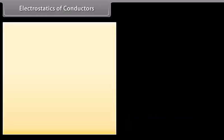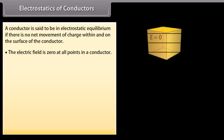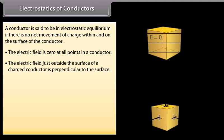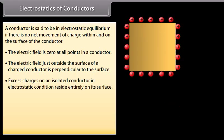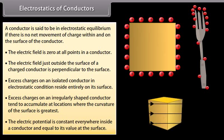Electrostatics of conductors. A conductor is in electrostatic equilibrium if there is no net movement of charge within or on its surface. The electric field is zero at all points inside a conductor. The electric field just outside the surface of a charged conductor is perpendicular to the surface. Excess charges on an isolated conductor reside entirely on its surface, and on an irregularly shaped conductor they accumulate where the surface curvature is greatest. The electric potential is constant everywhere inside a conductor and equal to its value at the surface.